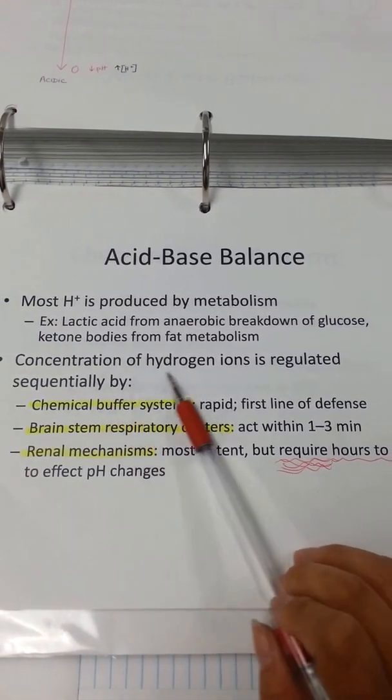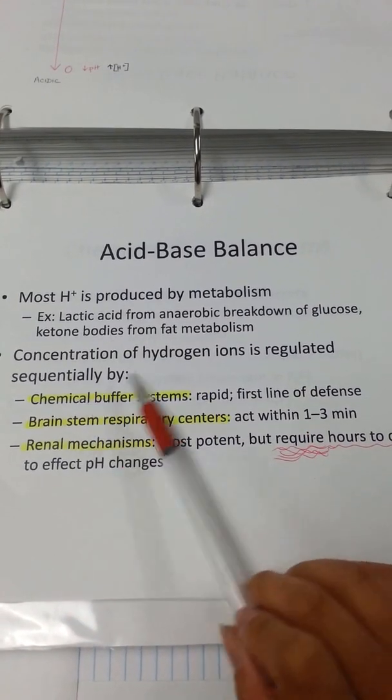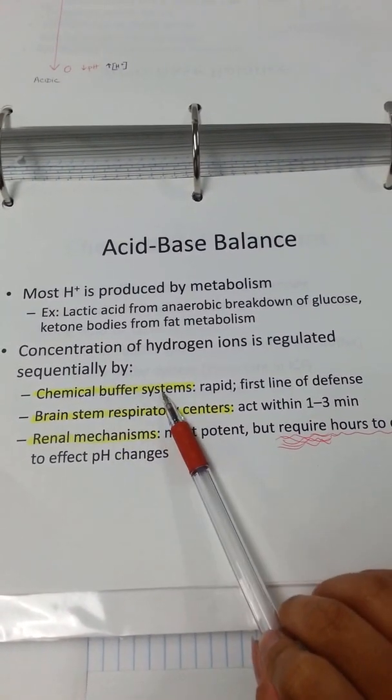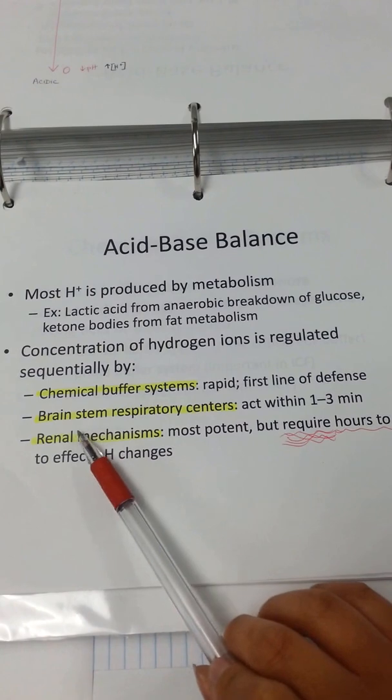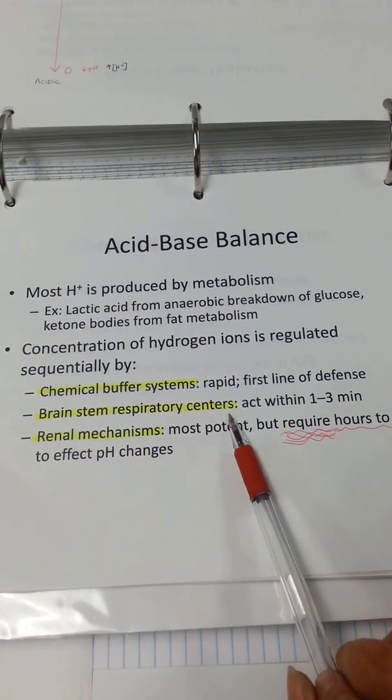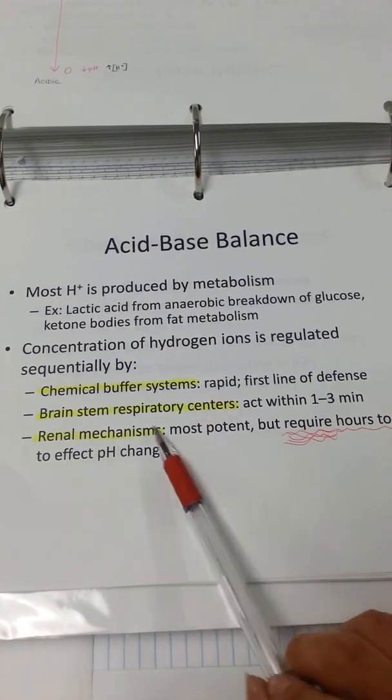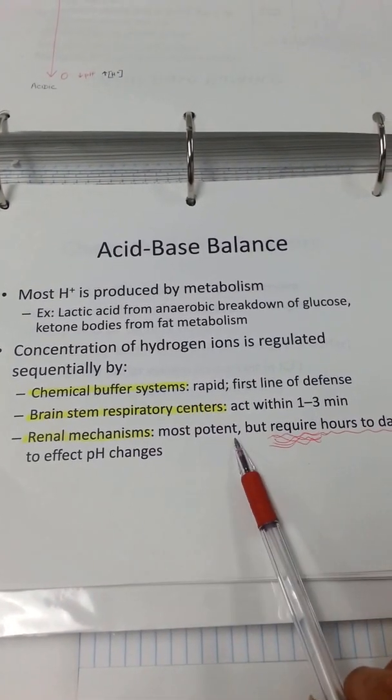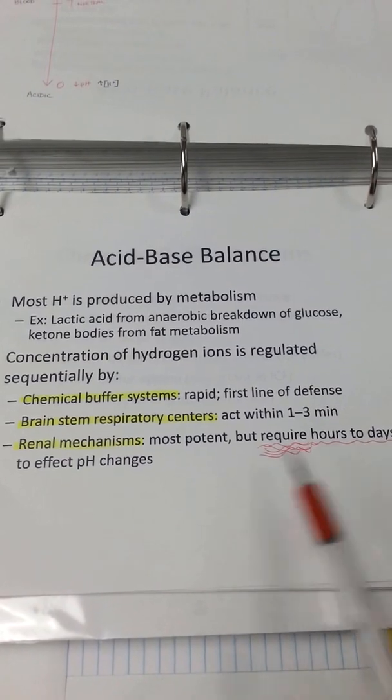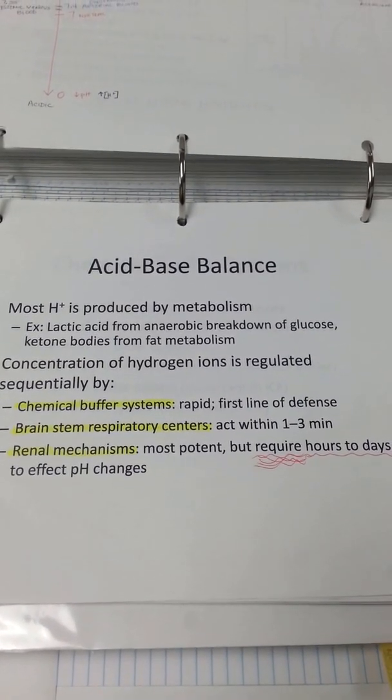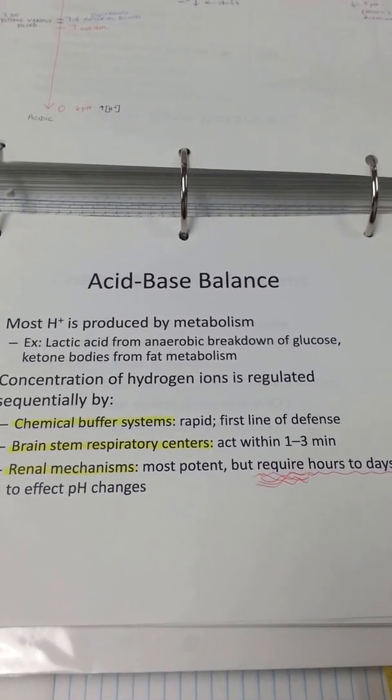Remember, the concentration of hydrogen ions is regulated sequentially by chemical buffers with the bicarbonate buffers, then the brainstem respiratory centers with ventilation and hypoventilation, and then the renal mechanisms, which is most potent but requires hours to days to affect the pH changes.